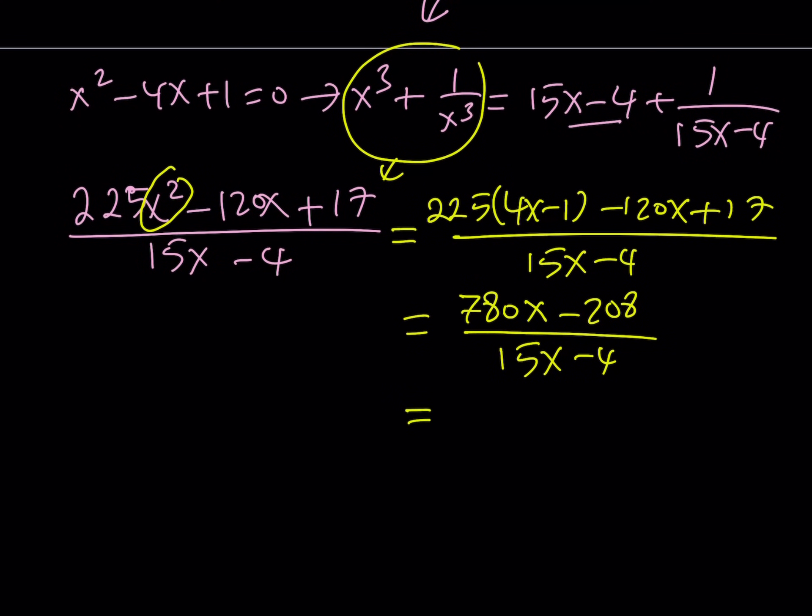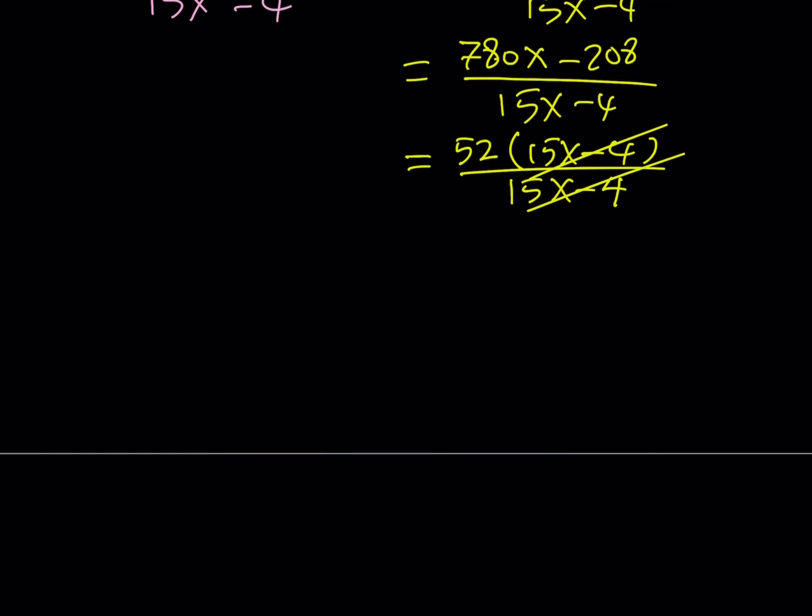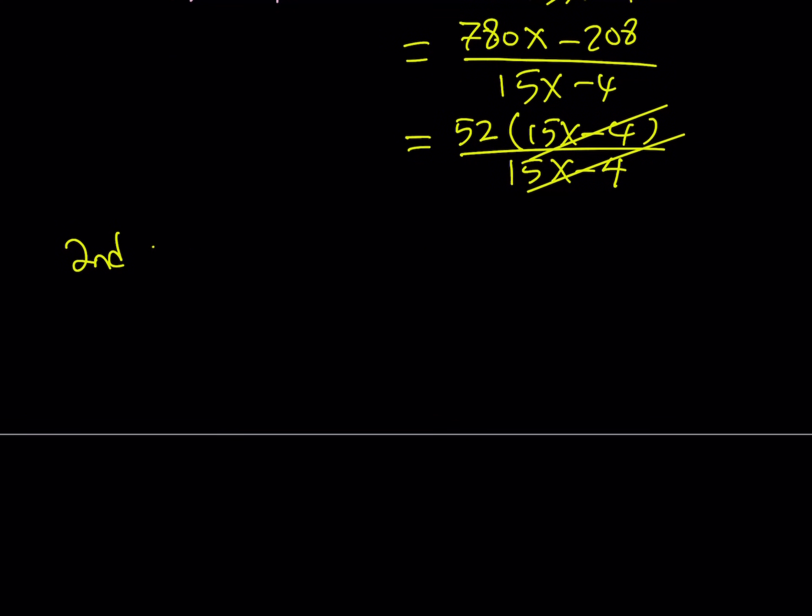And if you look at 780 and 208, both of them are divisible by 52. And this is actually 52 times 15, and this is 52 times 4. So if you take out a 52, you're going to get 52 times 15x minus 4 divided by itself. And at the end you're going to get the same answer. So it doesn't really matter - as long as x squared equals that, we're going to get the same answer.